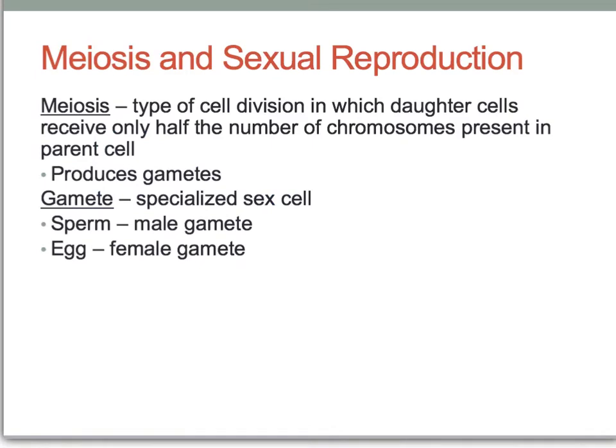Meiosis is a type of cell division in which daughter cells receive only half of the number of chromosomes present in the parent cell. Daughter cell refers to the cells produced by the process of meiosis.